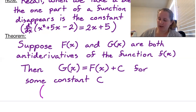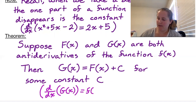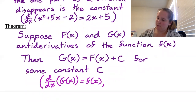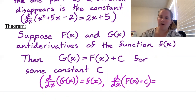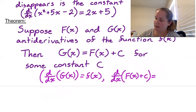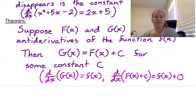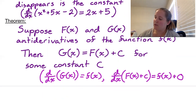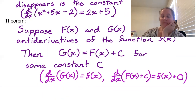Note that if we differentiate both sides: the derivative of G of x is just lowercase f of x by definition of an anti-derivative, and the derivative of capital F of x plus C — well, the derivative of capital F of x is just lowercase f of x, and the derivative of C would just be 0. So we do get these are both equal. Capital F of x plus C is still an anti-derivative. We're just claiming that G of x must be F shifted by a constant.